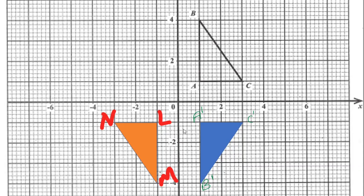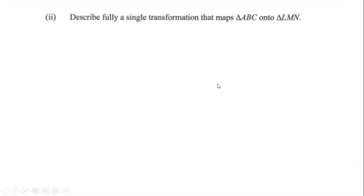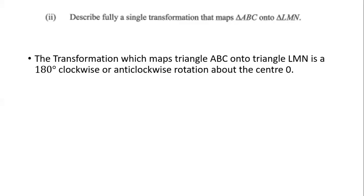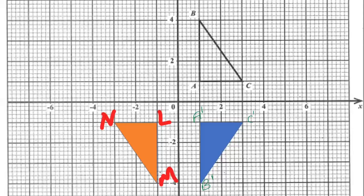This is the final answer for triangle LMN after the two reflections. Part 2 asks: describe a single transformation that maps triangle ABC onto triangle LMN. Observing the two triangles, the transformation is a rotation of 180 degrees, whether clockwise or anticlockwise, about the center.